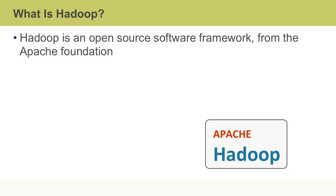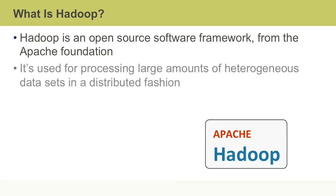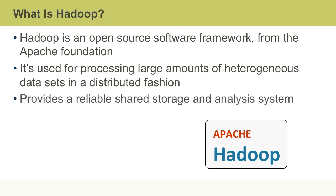Apache Hadoop is an open source distributed software platform for storing and processing large volumes of data from different sources. It provides a reliable storage and analysis system. Written in Java, it runs on a cluster of commodity machines.